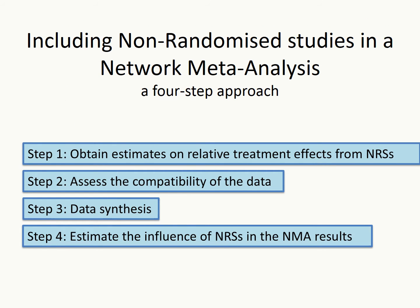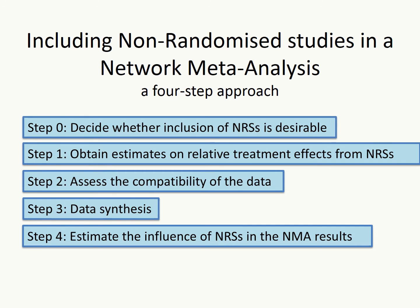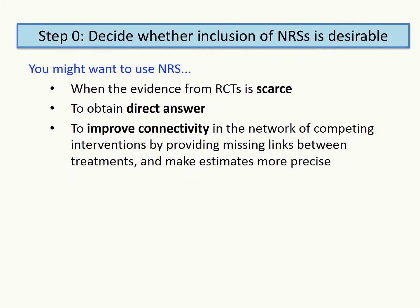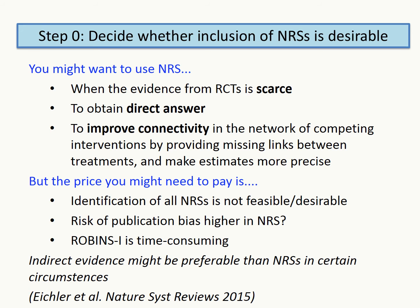We propose a four-step approach that could help researchers include non-randomized evidence into a network of randomized studies. Before starting the process, investigators should have already considered whether the inclusion of non-randomized studies is desirable. Including a non-randomized study might boost the precision of scarce evidence, provide direct evidence for comparisons where only indirect evidence is available, and improve connectivity by linking disconnected networks. On the other hand, registration of non-randomized studies is not compulsory, so the risk of publication bias and selective reporting might be high, and considerable resources are needed to identify all relevant studies and evaluate their risk of bias.